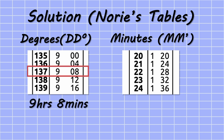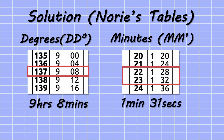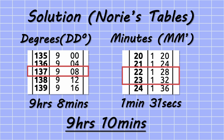If we look at minutes of longitude, there is no value of 22.8 minutes and hence we need to interpolate between 22 and 23 minutes of longitude, which in this case gives us 1 minute and 31 seconds. Taking into account our rules of rounding, this gives us a total value of 9 hours and 10 minutes — the same as when we used our calculators.